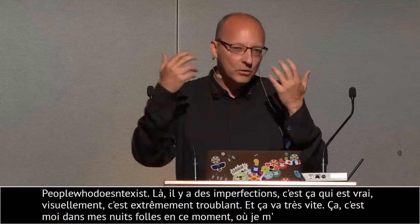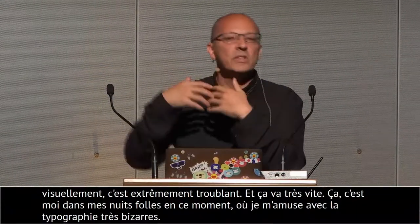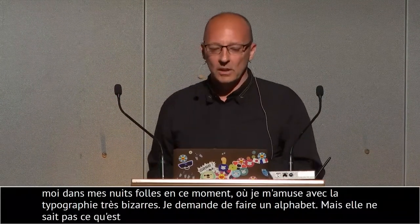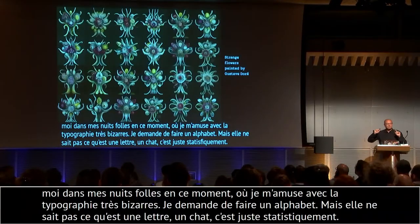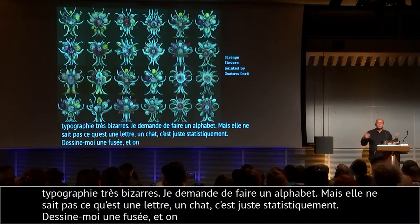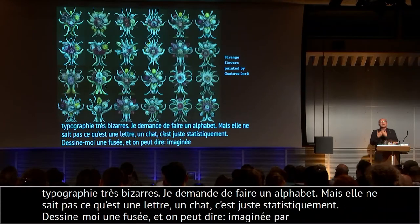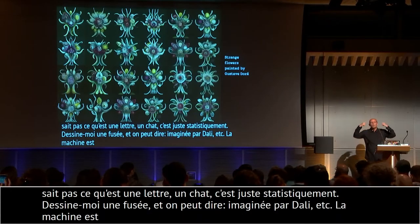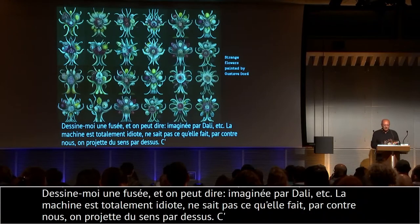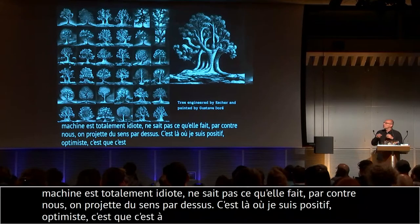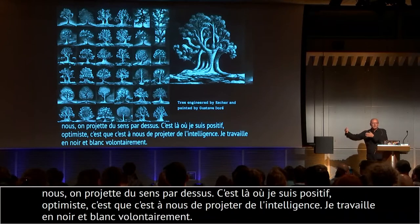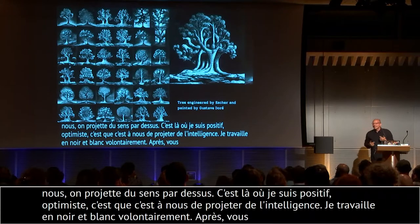Là je lui demande : « crée-moi un alphabet ». Mais elle ne sait pas ce que c'est qu'une lettre — elle ne sait pas ce que c'est qu'un chat. C'est juste statistique. Ce que j'ai tapé : « Dessine-moi des fleurs bizarres peintes par Gustave Doré ». C'est ça qui est génial — vous pouvez dire : « Dessine-moi une fusée imaginée par Escher, par Picasso, par Dalí. » Et c'est cette collision qui commence à être intéressante. La machine est totalement idiote et ne sait pas ce qu'elle fait. Par contre, nous, on projette du sens par-dessus.